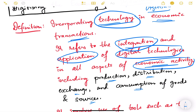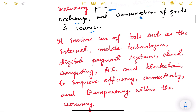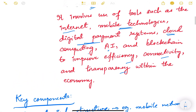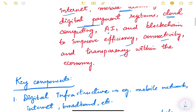It includes the use of tools like internet, mobile technologies, digital payment systems, cloud computing, AI, and blockchain, to improve efficiency, connectivity, and transparency within the economy. These are the various benefits that we get out of digitization of the economy.